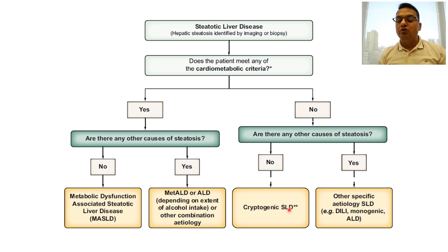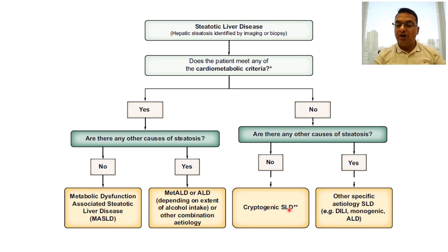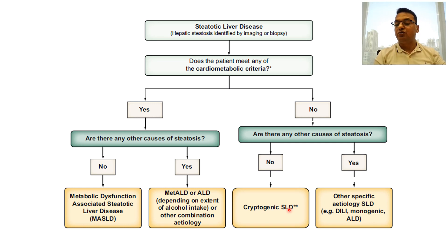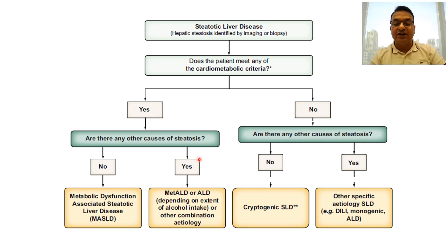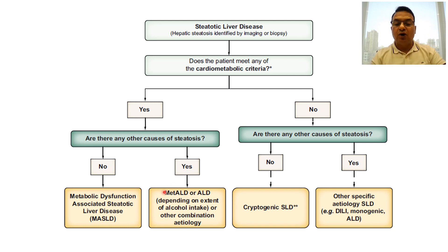So friends, this is what the new nomenclature in the field of steatotic liver disease looks like. We no longer use the word NAFLD — it is replaced by MASLD. We no longer use NASH — now we use MASH. And we have one more new category, MET-ALD, for a patient with MASLD who has excessive alcohol consumption. Thank you very much.